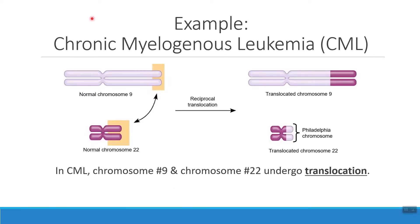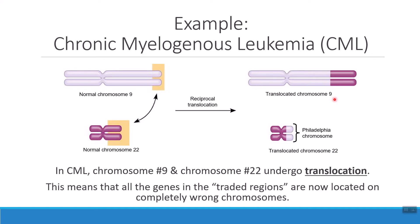We can also look at something called chronic myelogenous leukemia — CML — which is a type of cancer caused by a translocation. A translocation means that two chromosomes switch information with one another. In the case of CML, chromosome number nine changes information with chromosome number 22. When this happens, all of the information that used to be at the end of chromosome nine is no longer there — it's down on a different chromosome, and vice versa. All of the information that was supposed to be on chromosome 22 is now up on nine. Because of these differential locations, we end up developing this cancer, this leukemia.